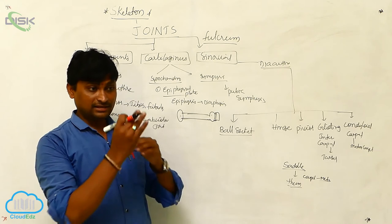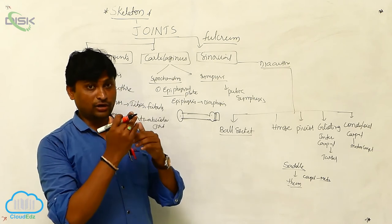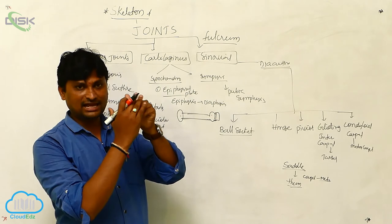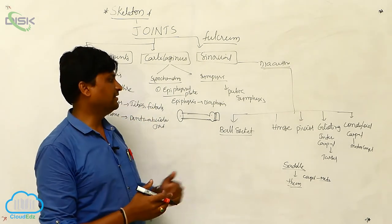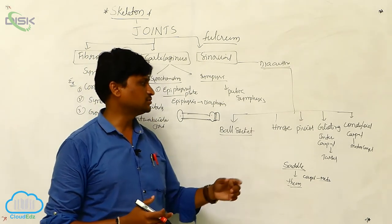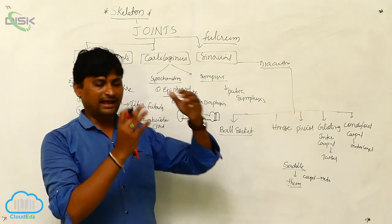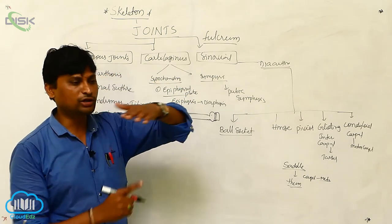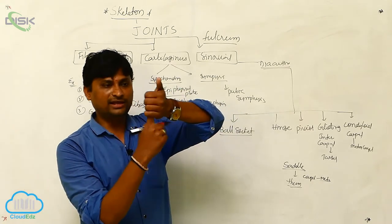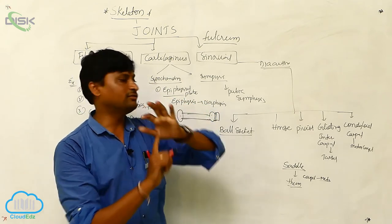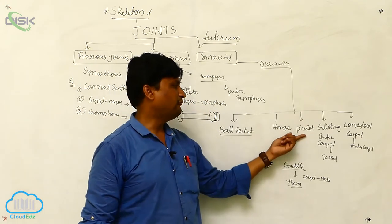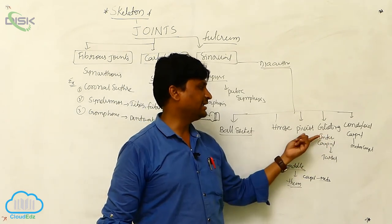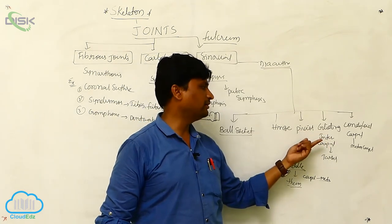The skull connects to the vertebral column at the occipital condyle, which articulates with the atlas and axis. At the axis, there is the dens (dental process), and the axis rotates around it. This type of joint is called a pivot joint. Next is the gliding joint, where one bone glides over another bone.